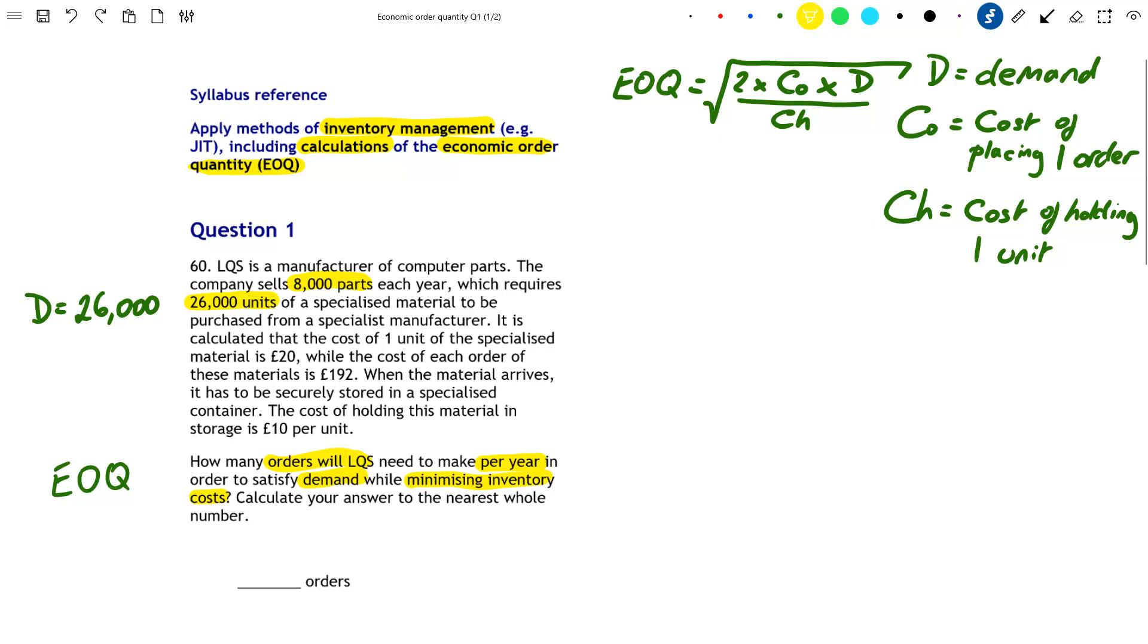The second sentence says that in order to purchase one unit of the specialized material, it will cost LQS 20 pounds. Now, this is the purchase cost, and we can see from our three variables that there is no purchase cost. So this number is there to distract you, it is not relevant to the EOQ. The next statement, however, is, as we can see, it costs LQS 192 pounds to place a single order. So we can immediately say that CO is equal to 192 pounds.